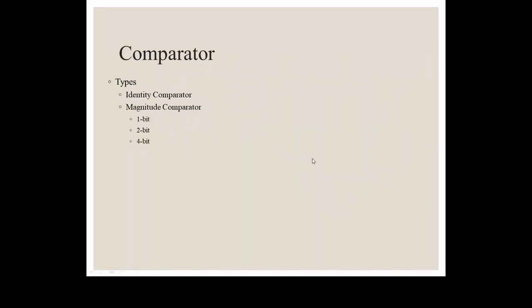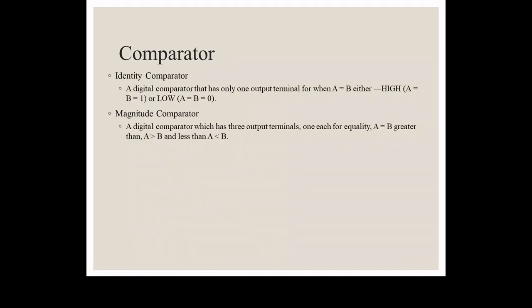There are two types of Comparators. One is the Identity Comparator and second is the Magnitude Comparator. The Identity Comparator has an output terminal only for checking identity — that is, if A is equal to B. If both inputs are high it gives output one, and if both are low it gives output one.